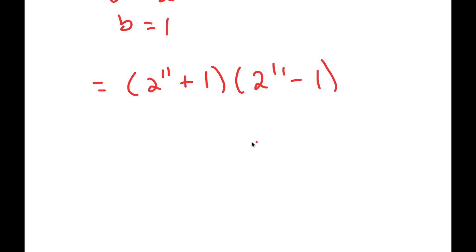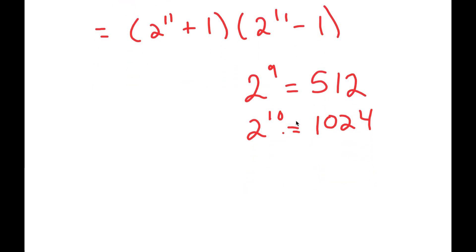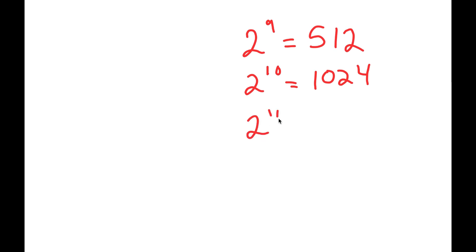What is 2 to the power of 11? Well, 2 to the power of 9 is 512. 2 to the power of 10 is going to be double of 2 to the power of 9, which is double of 512, which is 1024. So, 2 to the power of 11 is double of 1024, which is 2048.